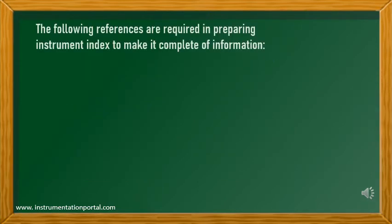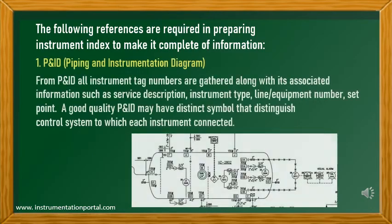The following references are required in preparing the instrument index to make it complete. First, P&ID or Piping and Instrumentation Diagram. From P&ID, all instrument tag numbers are gathered along with associated information such as service description, instrument type, line number or equipment number, and set point. A good quality P&ID may have distinct symbols that distinguish the control system to which each instrument is connected.